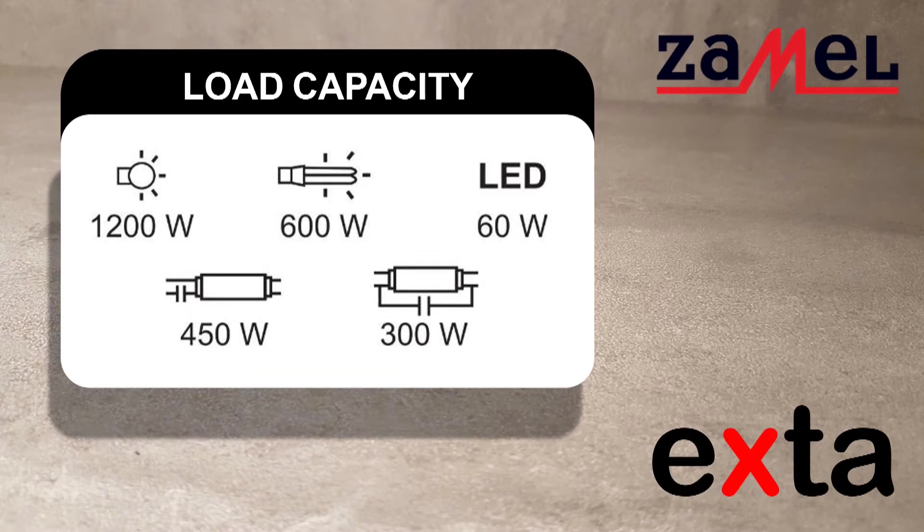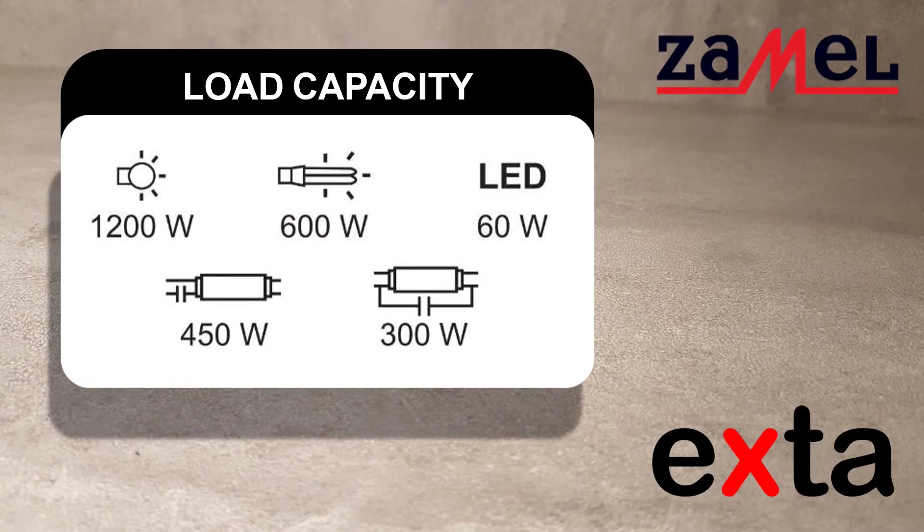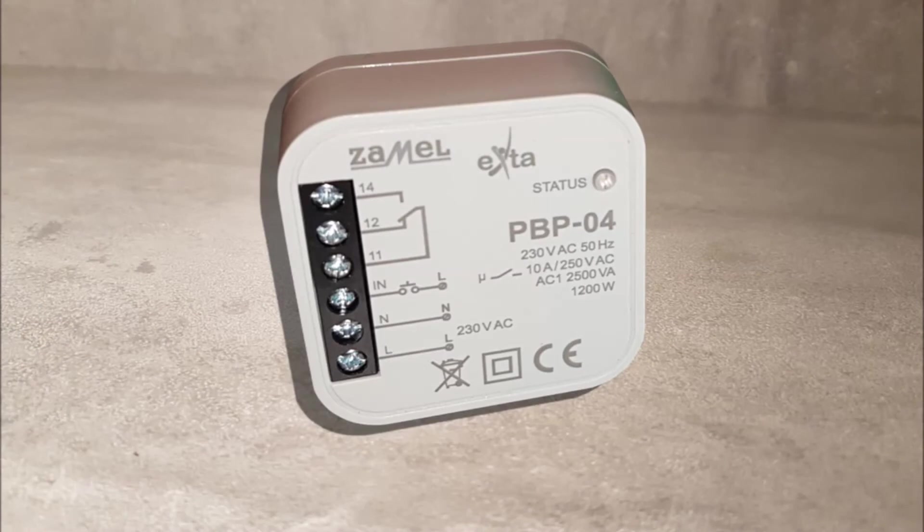Maximum load of the PBP-04 system is 1200 watts for incandescent sources, 60 watts for energy-saving sources, 60 watts for LED sources, and 450 and 300 watts respectively for inductive sources. Bistable double-state lighting control or control of any device.